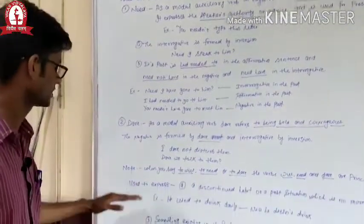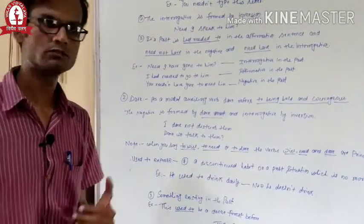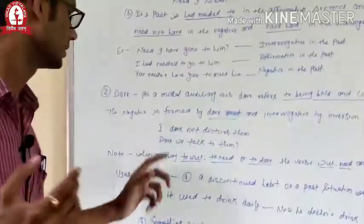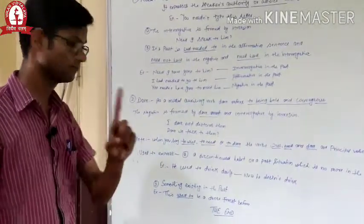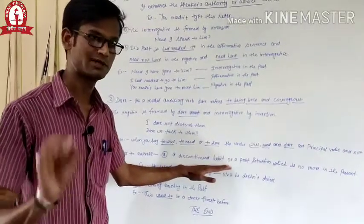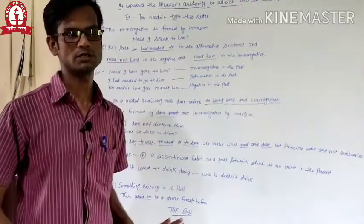What kind of utilization is expressed by used to? So here you can see, used to expresses, first, a discontinued habit or a past situation which is no more in the present. It shows a past habit or past situation.